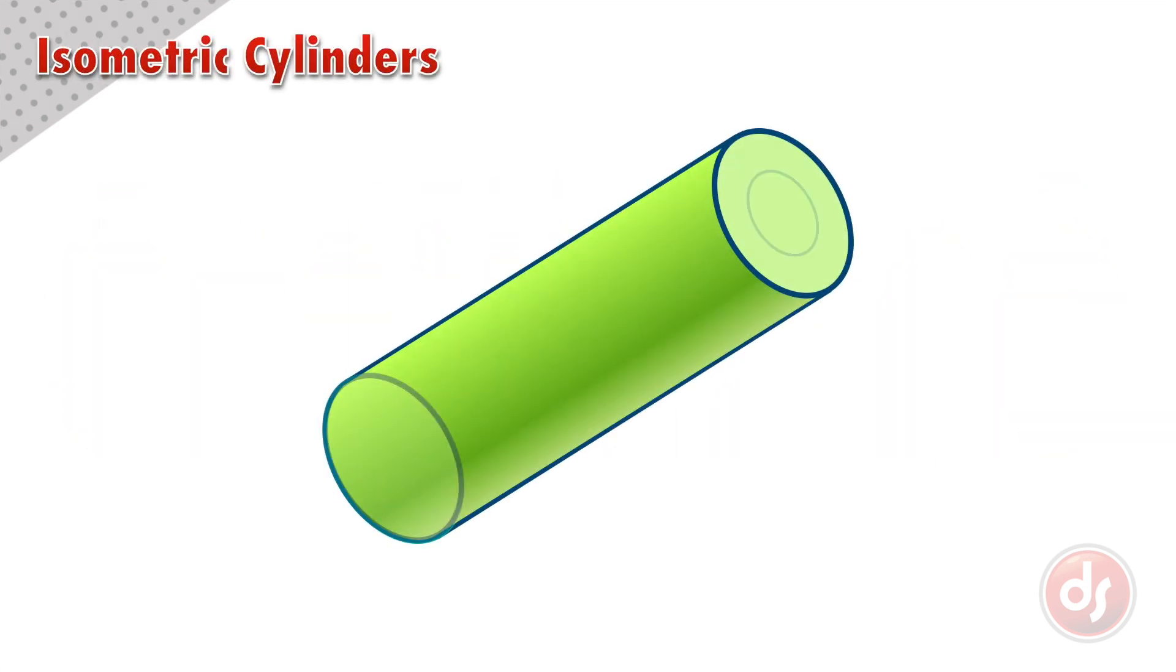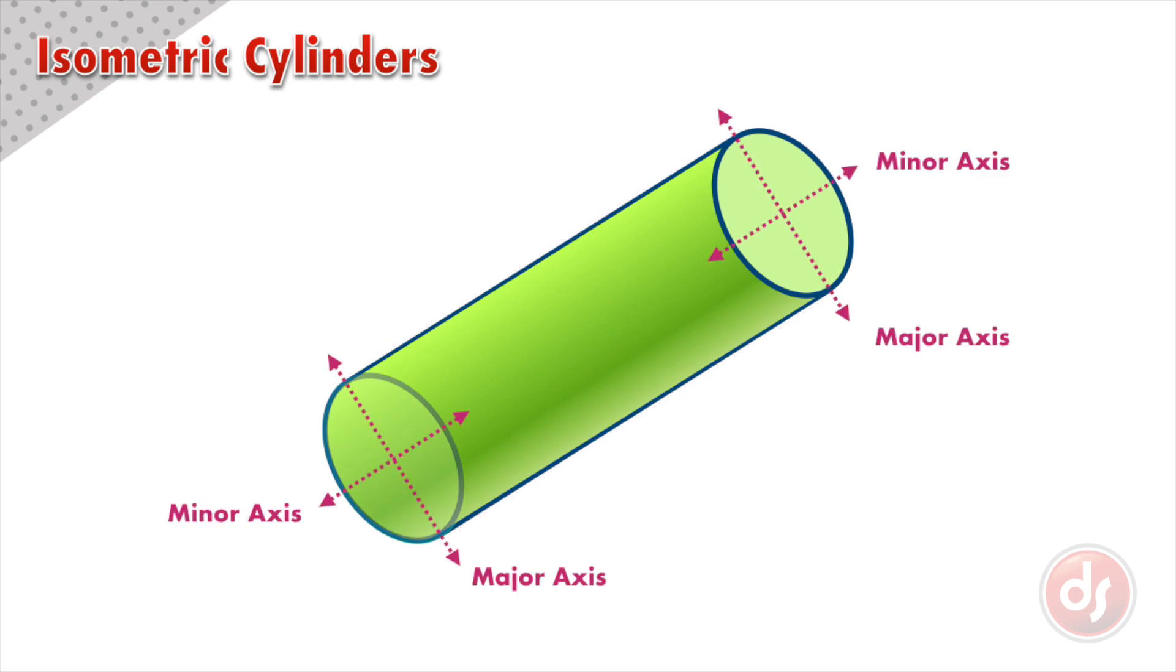A cylinder is two ellipses connected with straight lines. The major and minor axis of a cylinder in isometric perspective will be going in the same direction. We can also think of these as the X and Y line systems.